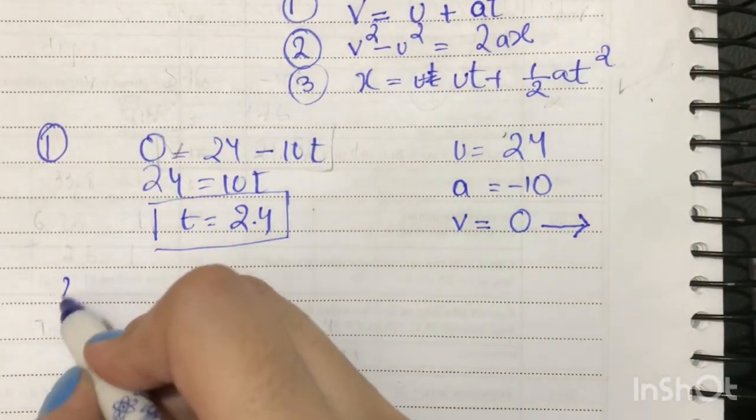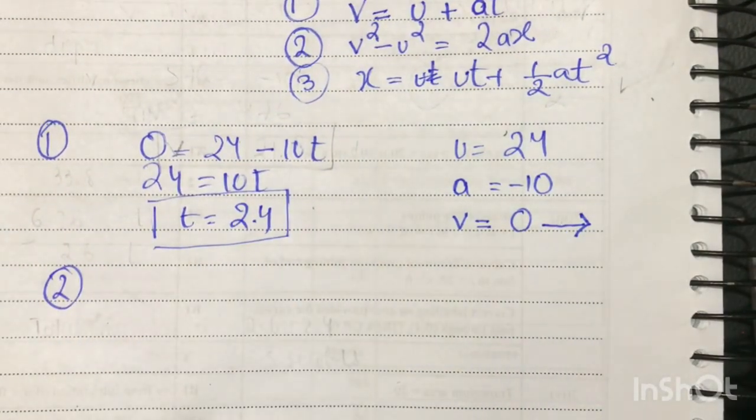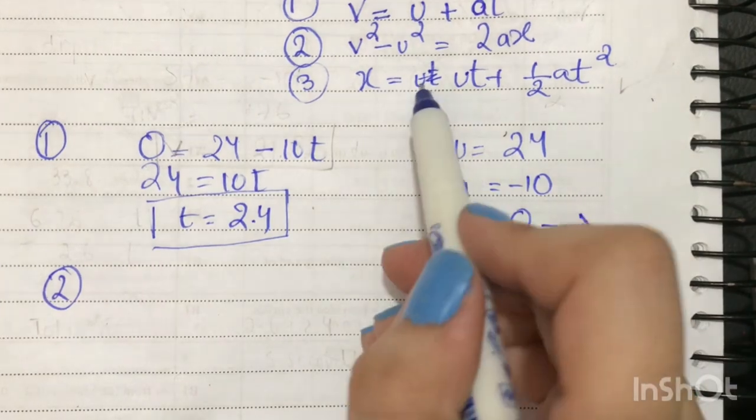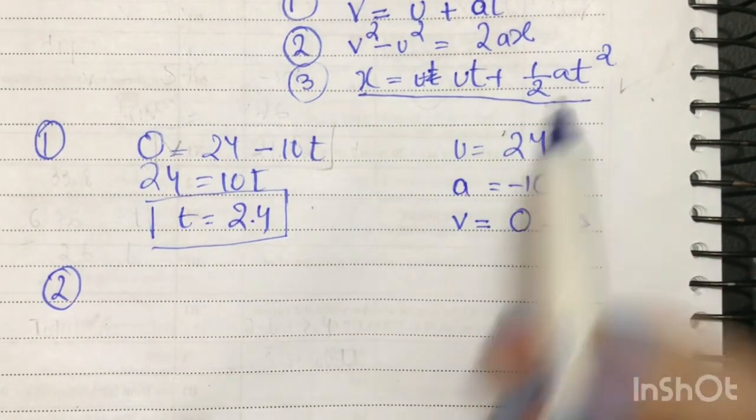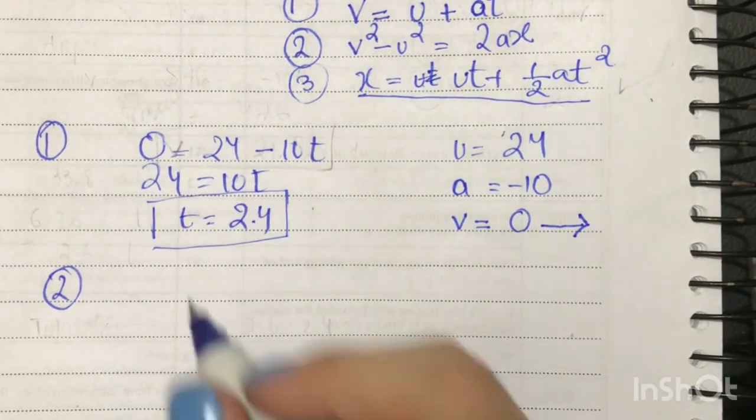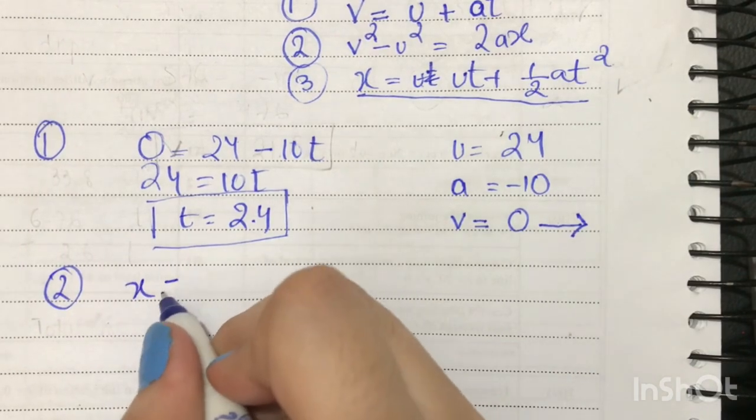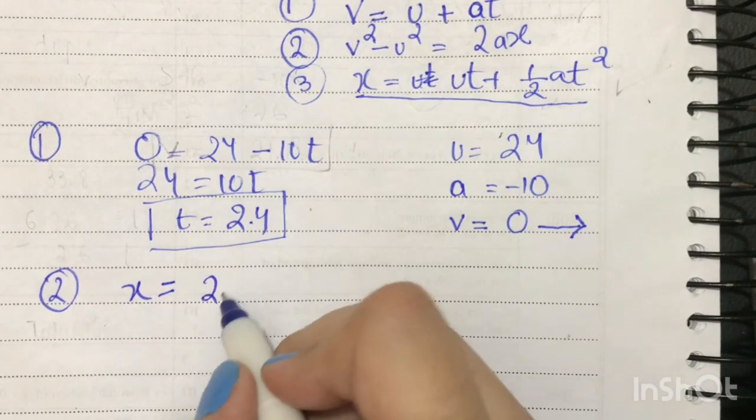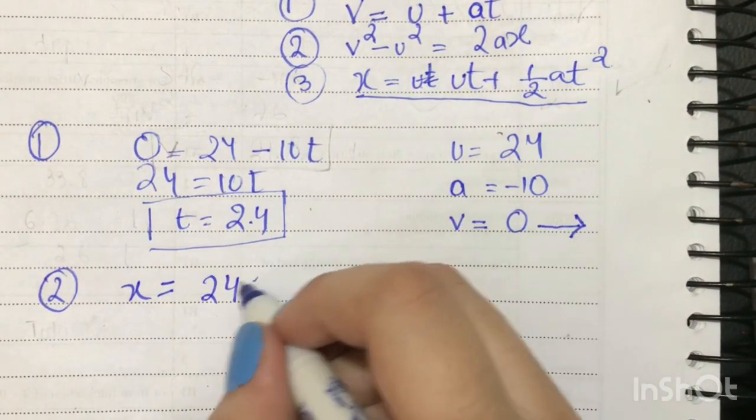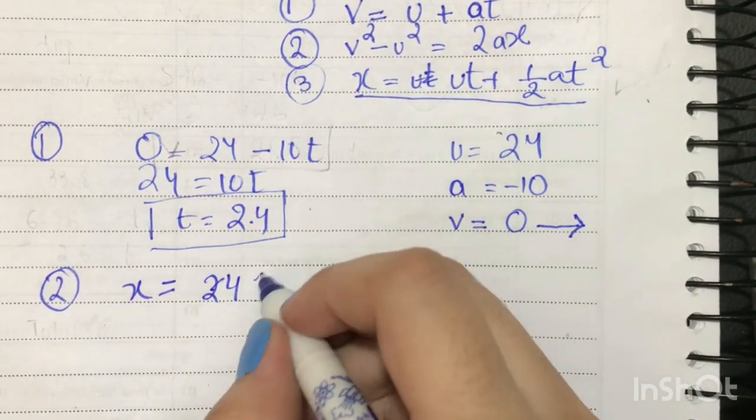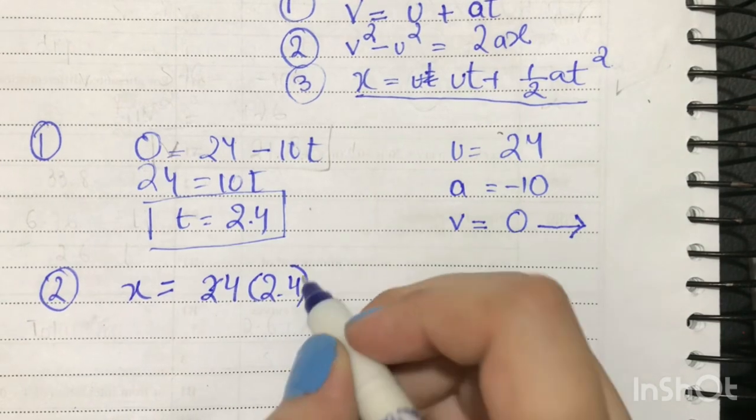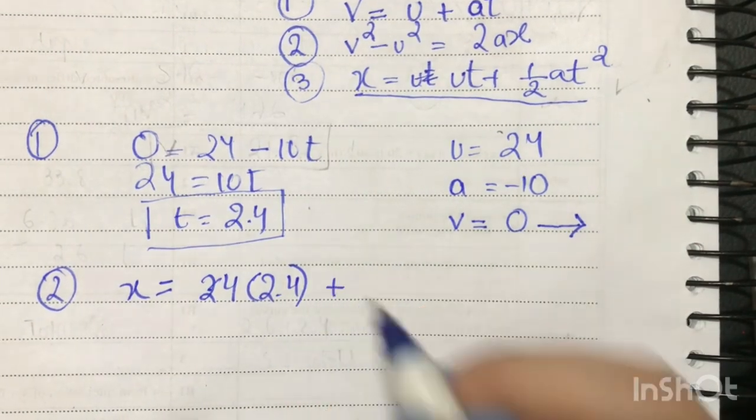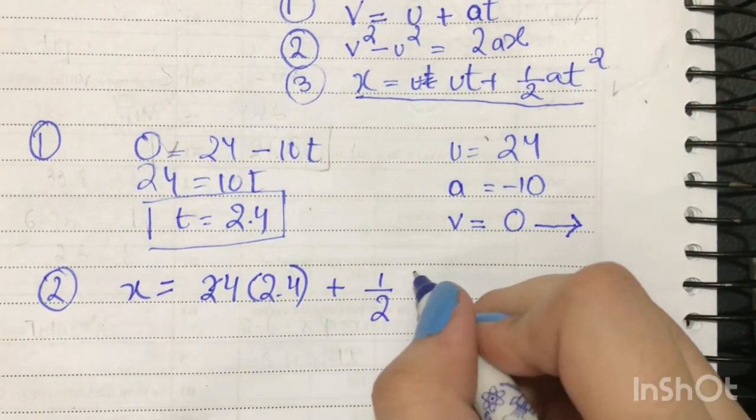So for that, what we will do is we can use this formula, which is the distance traveled x equals ut. Now we know the initial velocity is 24 and the time taken is 2.4, plus half multiplied by the acceleration and time.